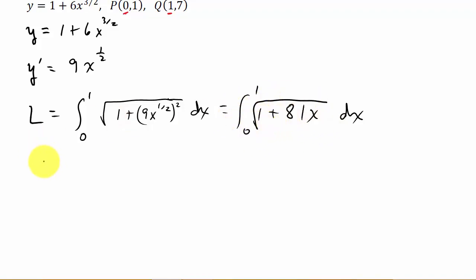Alright, so what I'm going to do is, you can see when we integrate this, we're going to use u substitution. So what I'm going to do is I'm going to rewrite this as 1 plus 81x to the 1 half. Change the square root to an exponent. So I'm going to say let u equal 1 plus 81x. And so du is equal to 81 dx.